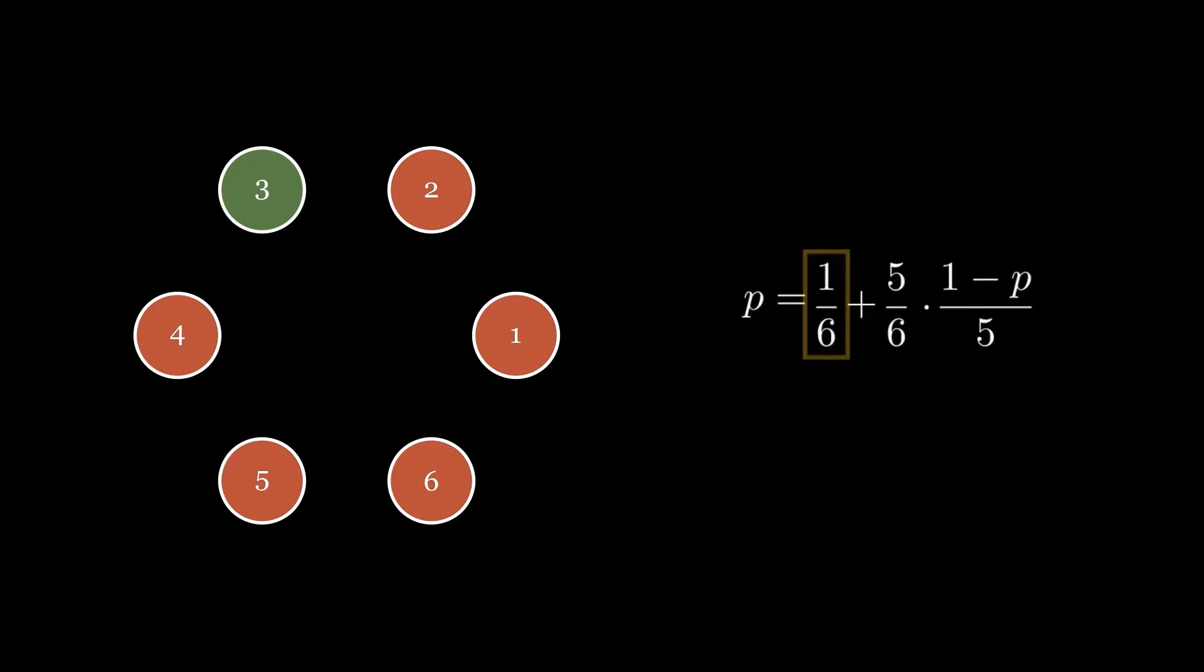The first term corresponds to the case where player one rolls a one on his first roll. The second term corresponds to the case where he doesn't roll a one on the first roll and becomes a red player. Solving this equation, we get p as 2 over 7, which is our answer.